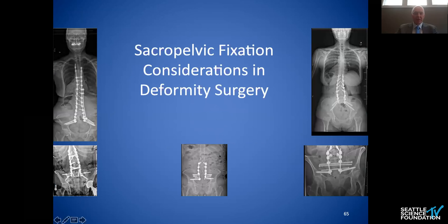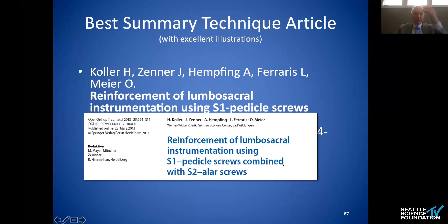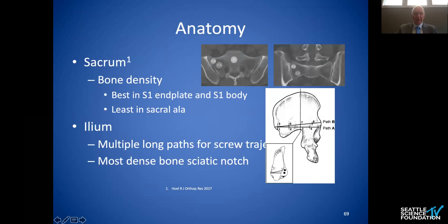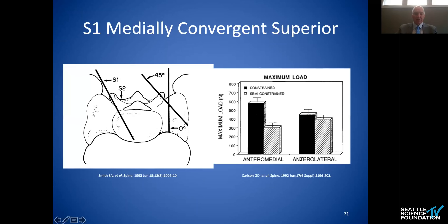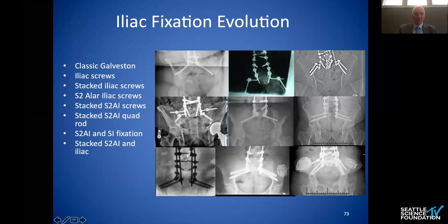I was asked to talk about spinopelvic fixation in deformity surgery — why we do it, the biomechanics, and the options. The best article on this has great pictures from Heiko Kohler. The problems are pseudoarthrosis and screw failure. The best bone in the sacrum is in the S1 end plate and body; the ilium has multiple long paths. S1 pedicle screws should be immediately convergent to be optimized. The sacral promontory gives doubled insertional torque compared to a conventional trajectory.